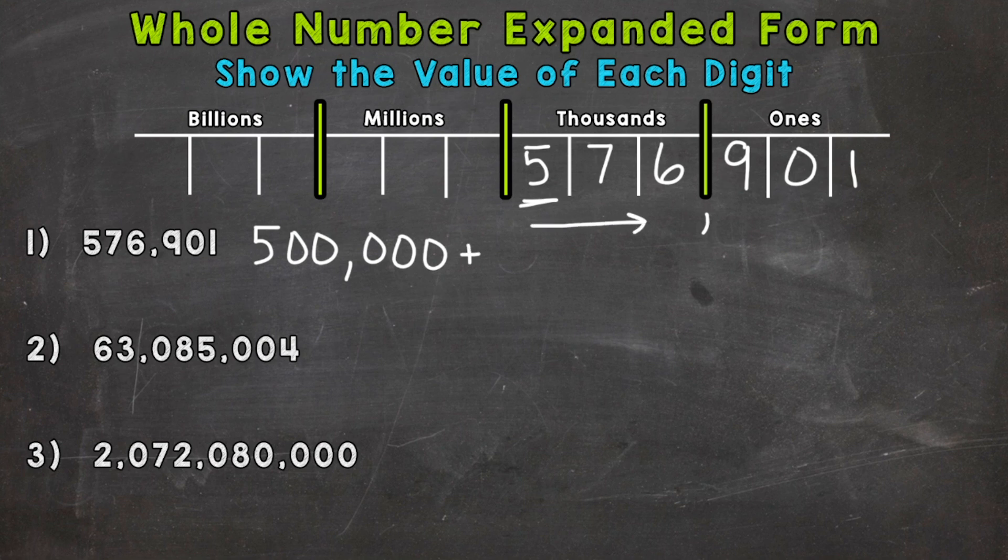So plus we need the value of the seven. So that's in the 10,000 place. So it has a value of 70,000. Plus our six here is in the thousands place. So it has a value of 6,000 plus a nine that's in the hundreds place. So it has a value of 900.